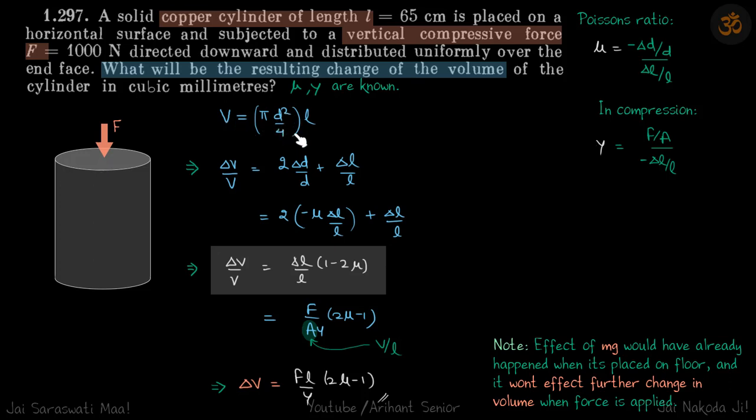Volume is πD²/4 times L. We can differentiate both sides and what we get is δV/V equals 2δD/D plus δL/L. Of course you need to differentiate and then divide by the same quantity to get this result.